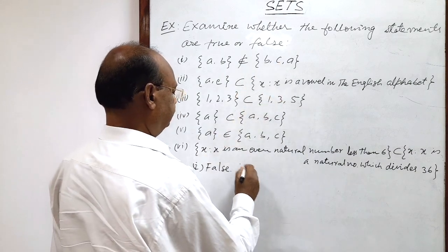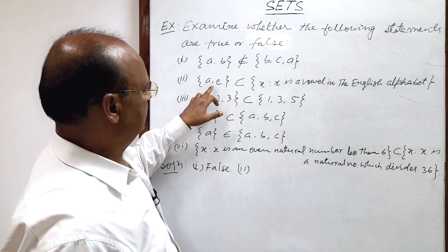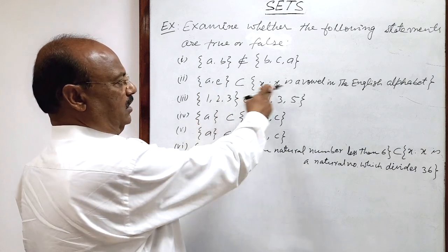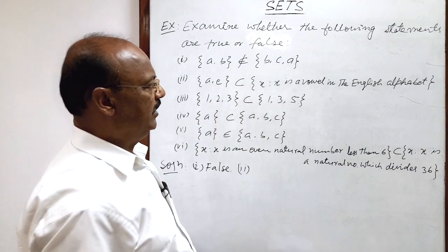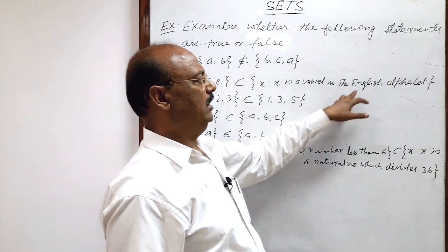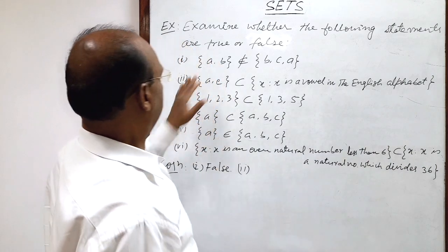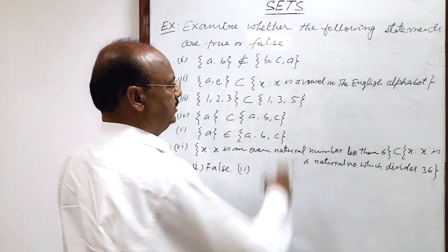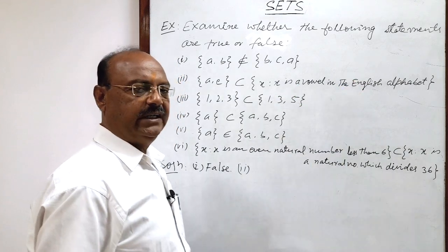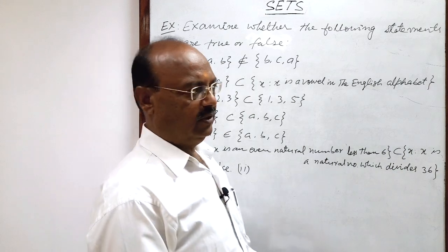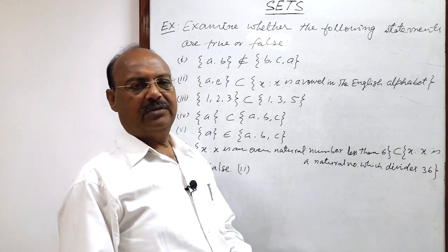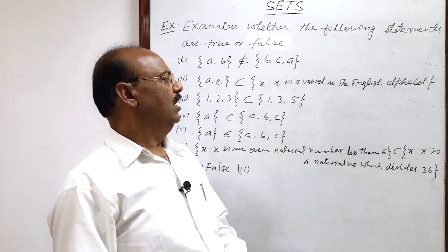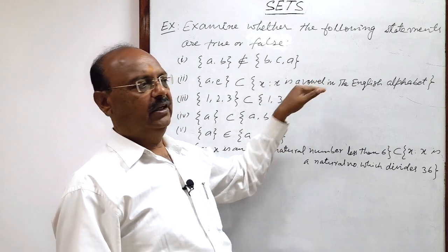Second, the left hand side set is having members A and E, and the right hand side set is {x : x is a vowel in the English alphabet}. This is mentioned in set builder form. We have already discussed in previous videos that there are two types of representations: tabular form, where every element is written clearly, and set builder form.